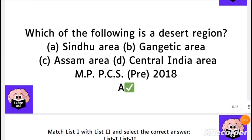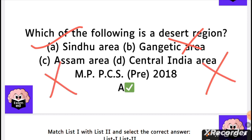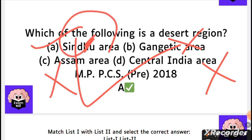Which one is the desert region? The Sindhu area — there is no desert region there. There is no desert region in central India either. So we can eliminate those options. The correct desert region is in Rajasthan.